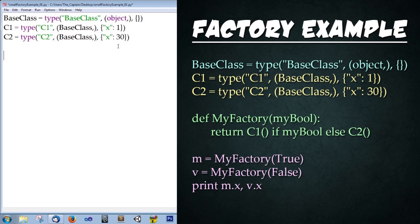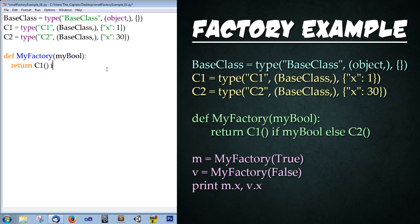Now after this, we're going to create a function that determines which class to return. So type: def my_factory(my_bool): — we're going to pass in a boolean into the arguments. Then type: return C1() if my_bool else C2(). We're compressing an if/else statement into one single line. If my_bool is true, C1 is returned; else C2 is returned. This is a great way to shorten up your code.